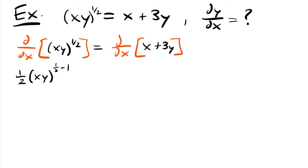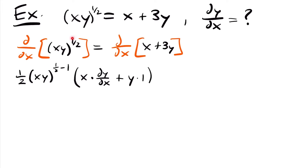We multiplied our exponent in front and then subtracted 1. Now that we've taken the derivative of our outside function, we need to take the derivative of our inside function x times y using the product rule. Anytime you see x multiplied by y in any form, you need to use the product rule. So we multiply by the derivative of xy: first function x times the derivative of y, which is dy/dx, plus the second function y times the derivative of x, which is 1.